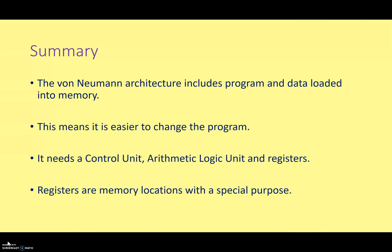In summary, the von Neumann architecture includes program and data loaded into memory — this is what made it better than older systems like the Colossus. Sometimes the von Neumann architecture is called the stored program computer because the program is stored in memory, making it a lot easier to change. It needs a control unit, an arithmetic logic unit, and registers. Registers are memory locations with a special purpose used temporarily while the computer is running. I hope that wasn't too painful, and I will look forward to seeing you all in class.